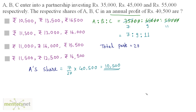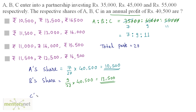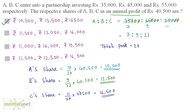B's share is equal to 9/27 of 40,500, which equals 13,500. C's share is equal to 11 out of 27 parts of 40,500, so 11 by 27 times 40,500, which equals 16,500. Therefore option A is the correct answer.